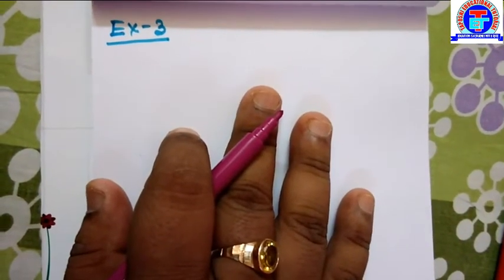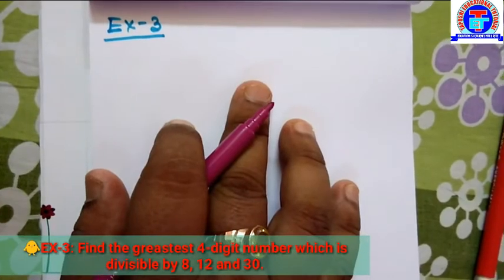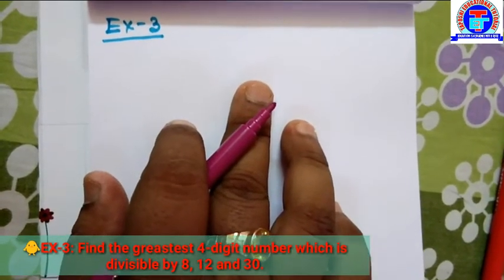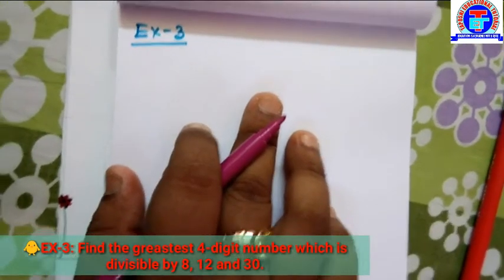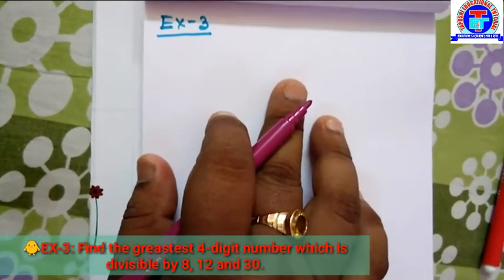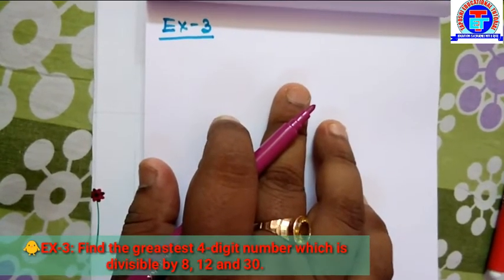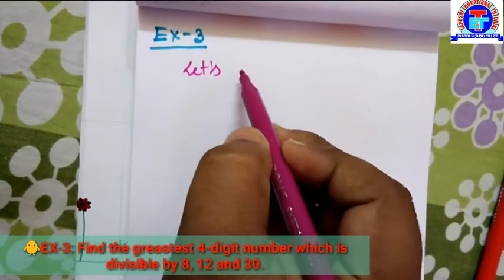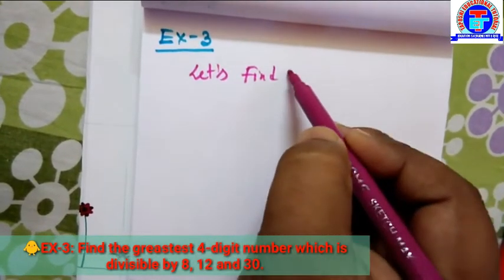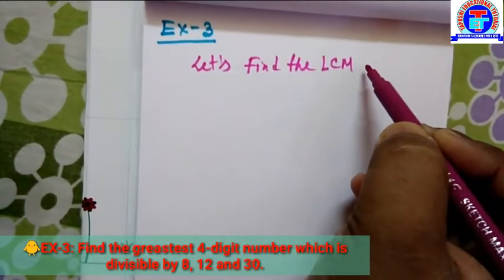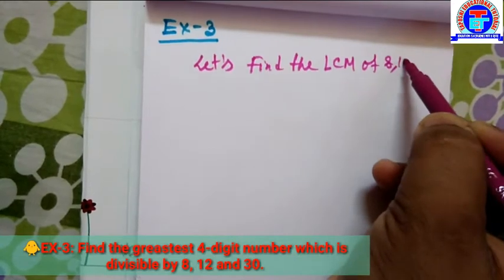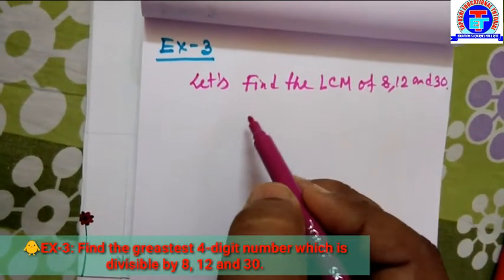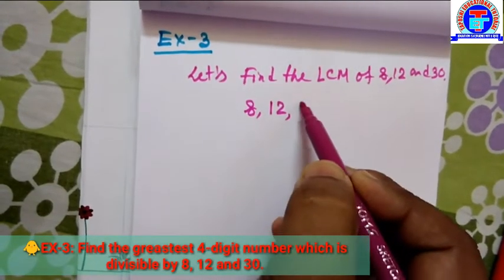Here we discuss another problem: find the greatest four-digit number which is divisible by 8, 12, and 13. It is an easy problem. Let's find the LCM of 8, 12, and 13. We do the LCM calculation here for 8, 12, and 13.